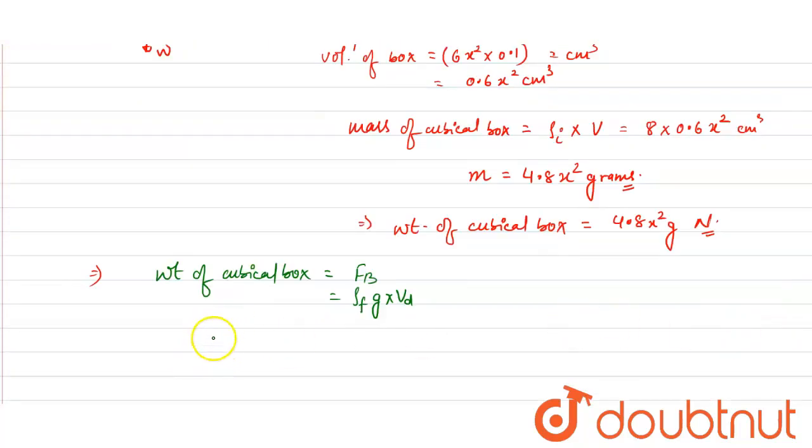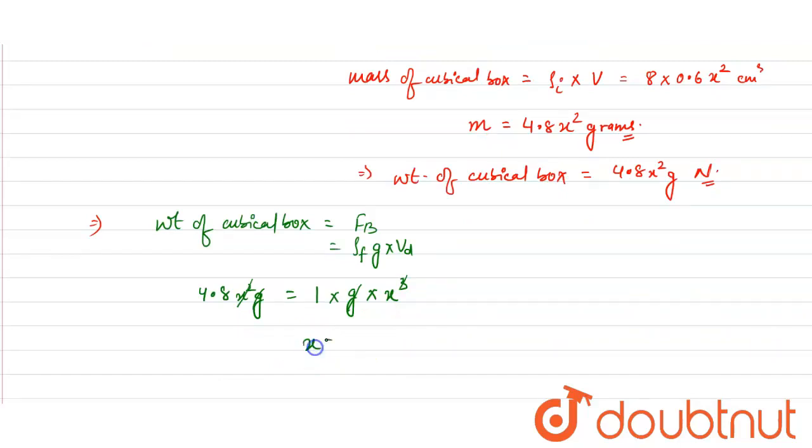The weight 4.8x²g equals density of fluid (1000 kg/m³ or 1 g/cm³) times g times volume displaced (x³). After canceling x² and g, we get x equals 4.8 centimeters.